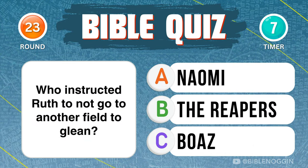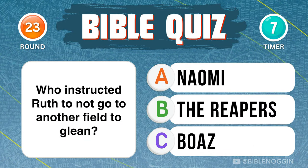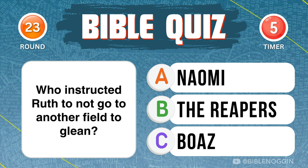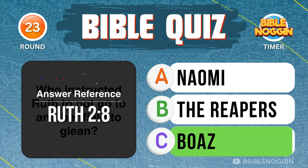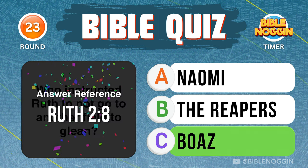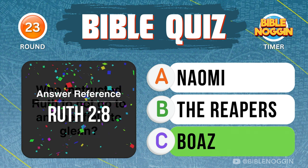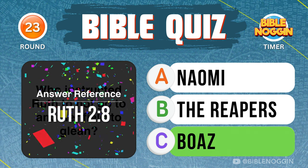Question 23: Who instructed Ruth to not go to another field to glean? Boaz — found in Ruth chapter 2, verse 8.